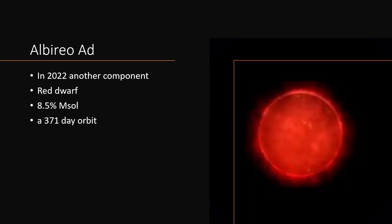There's even evidence that there's an AD component, which is a small red dwarf, very small indeed, 8.5% of the mass of the sun is about as small as a proper star can be in an orbit going around in just 371 days. So much closer than Albireo AC.